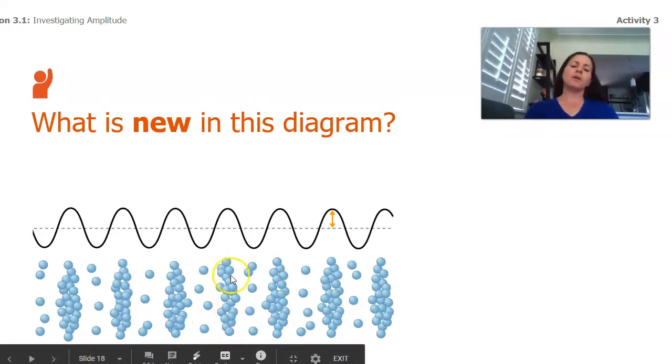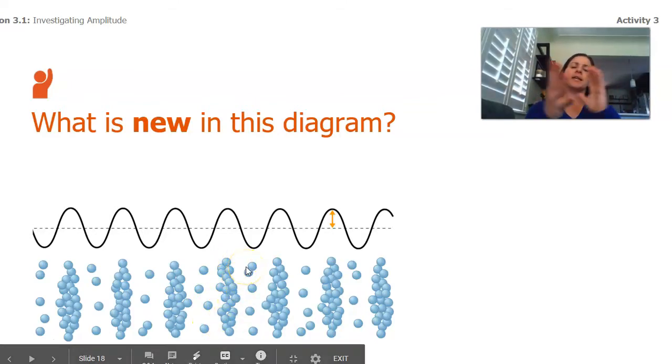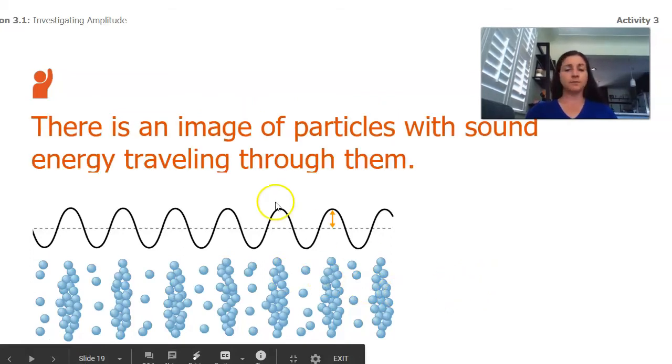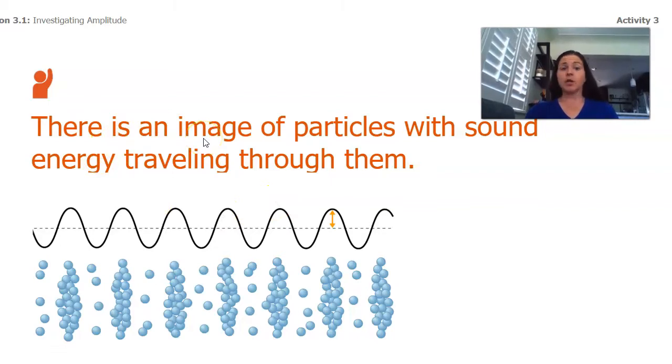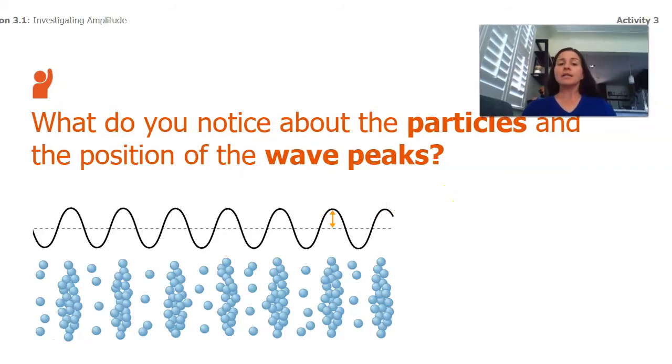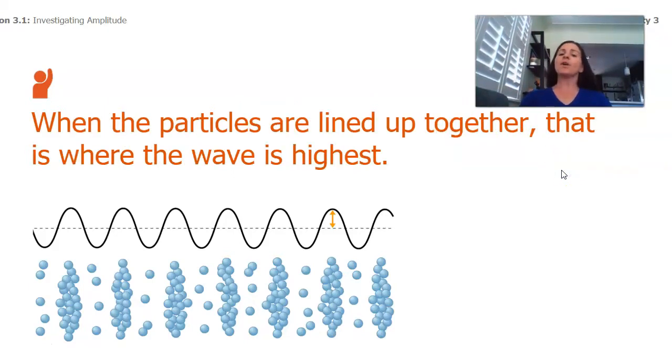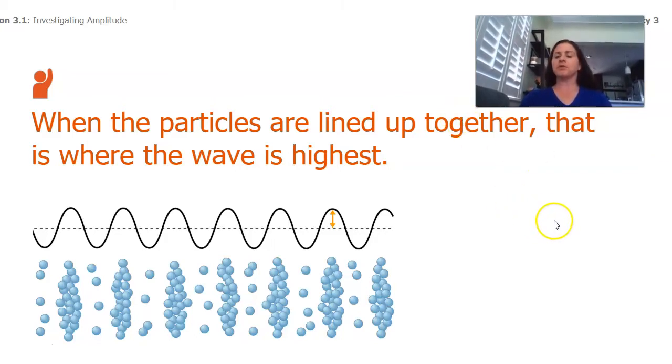Well, I see a bunch of particles together, wherever the wave is the tallest. Do you see anything else? If you do, maybe share with somebody in your house. So I see an image of particles with sound energy traveling through them as a wave. And what do I notice about the particles in the position of the wave peaks, the very top part? I'm noticing that where the particles are all lined up together, where they're all grouped up, that's where the wave is the highest.